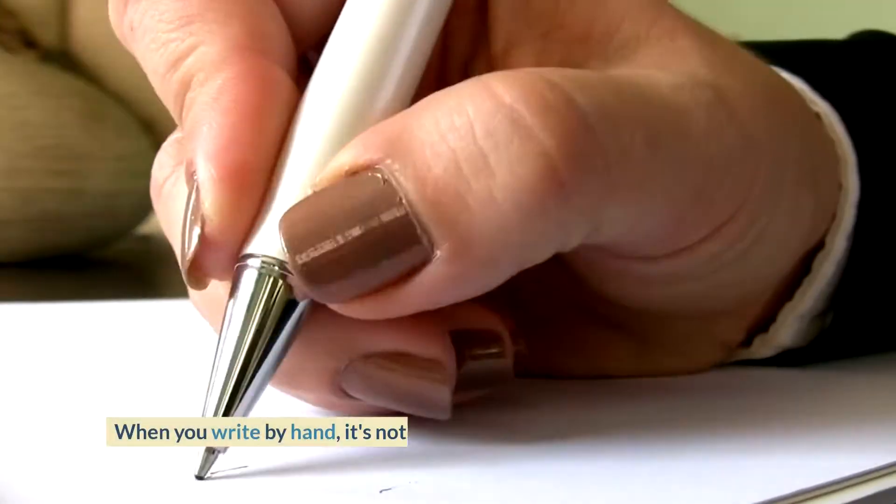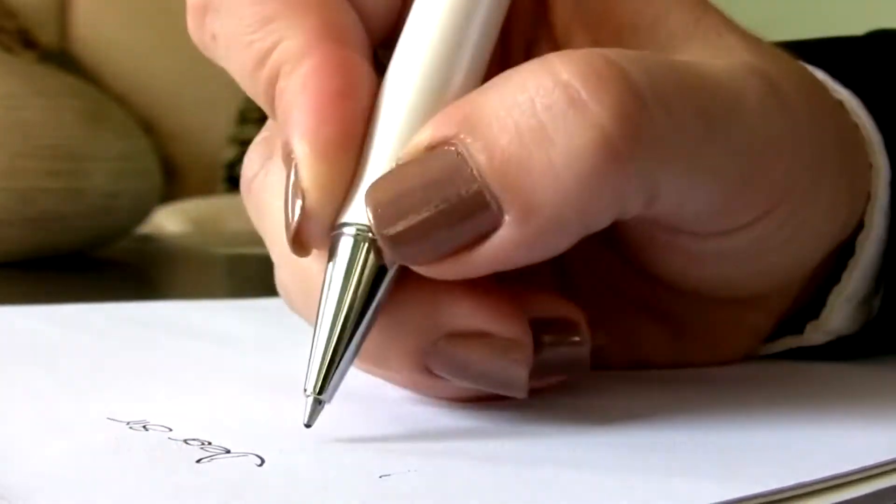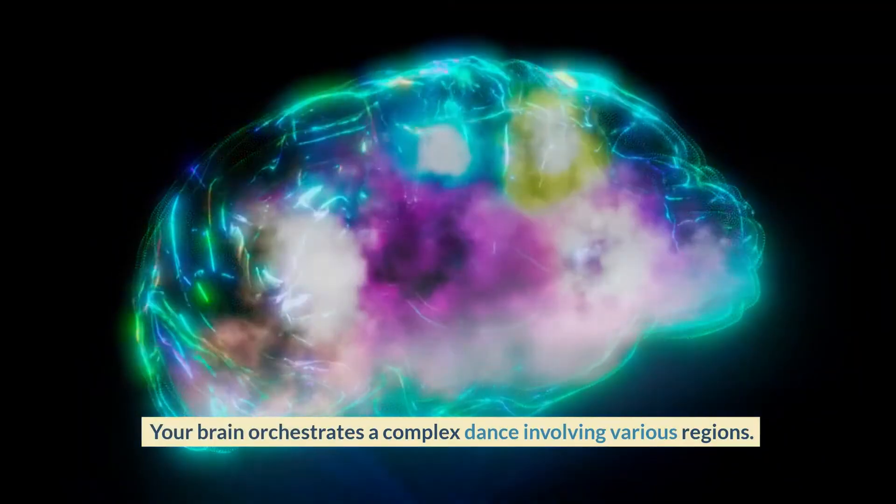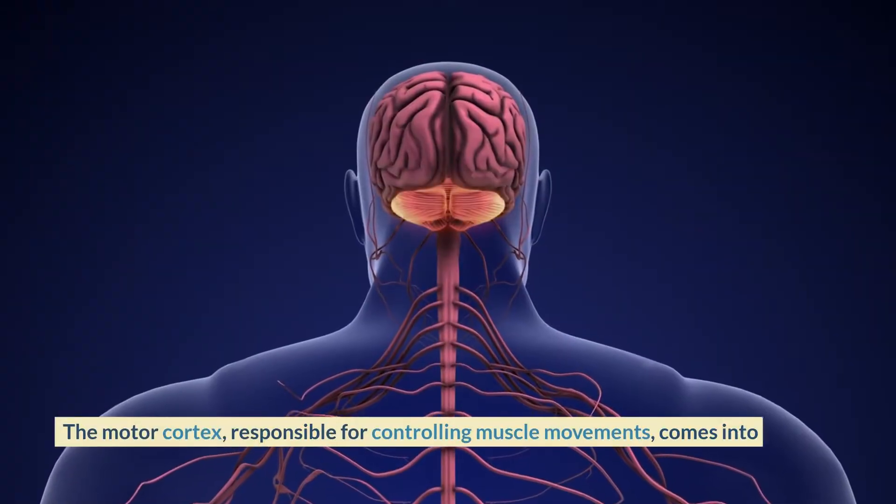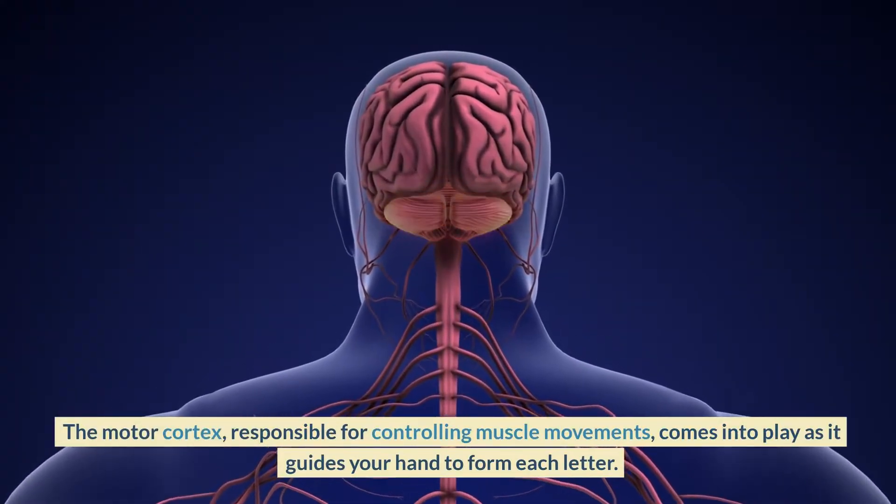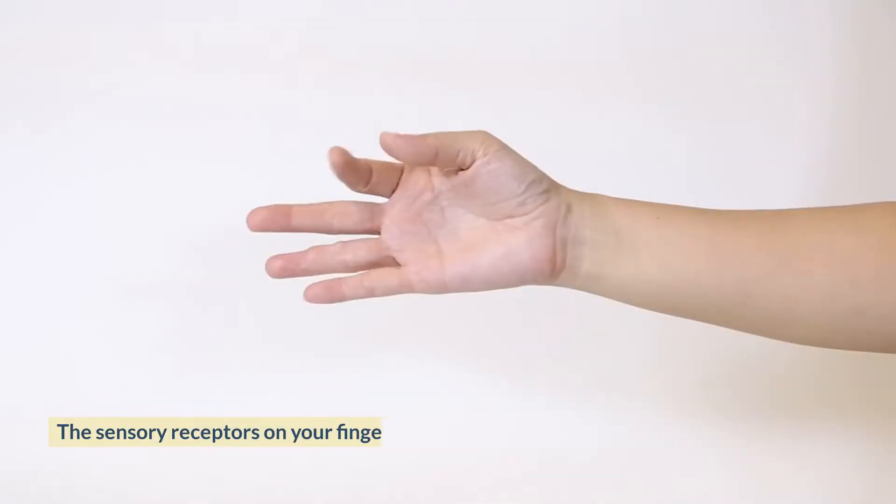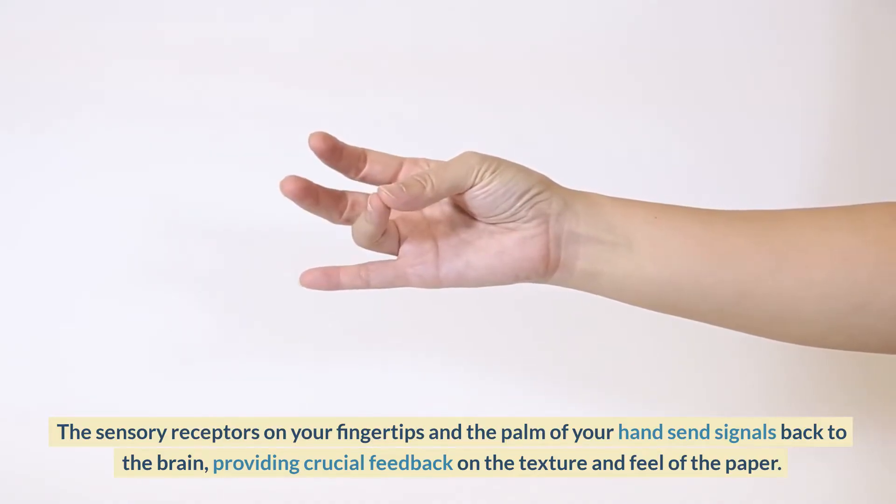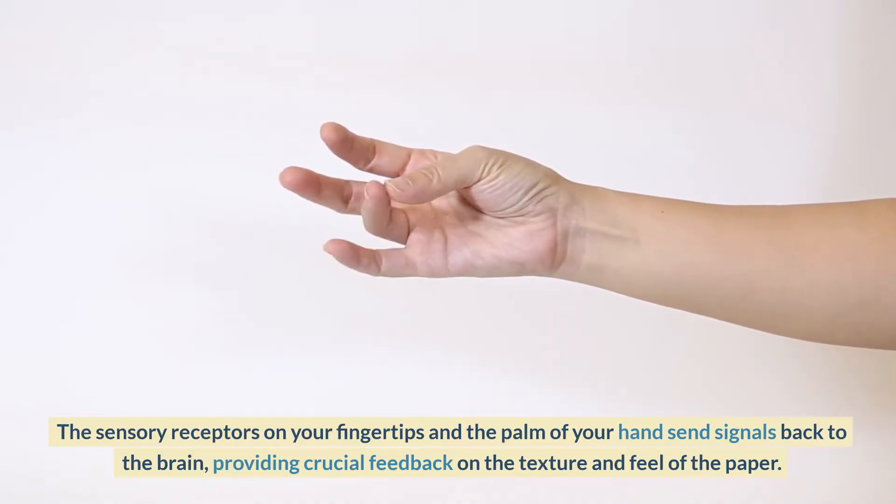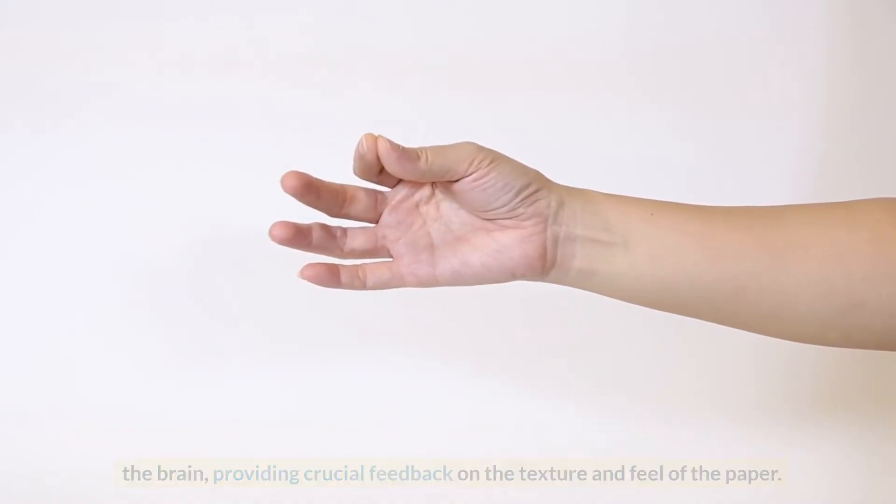Brain Activation. When you write by hand, it's not just your hand and fingers doing the work. Your brain orchestrates a complex dance involving various regions. The motor cortex, responsible for controlling muscle movements, comes into play as it guides your hand to form each letter. The sensory receptors on your fingertips and the palm of your hand send signals back to the brain, providing crucial feedback on the texture and feel of the paper.